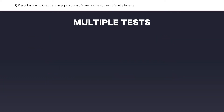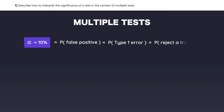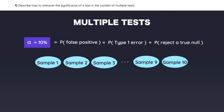This next learning outcome has to do with analyzing multiple tests. Let's assume that a test has a 10% level of significance. The alpha is the same as the probability of a false positive, or a type 1 error, which is when you rejected a true null hypothesis. For example, if you draw 10 samples from a population for a hypothesis test, 10% of the time — or 1 out of the 10 samples — will be a false positive.